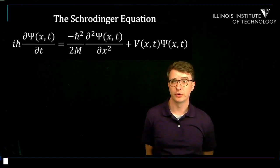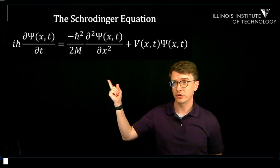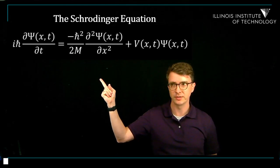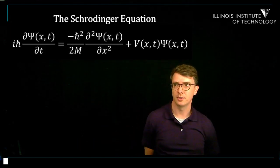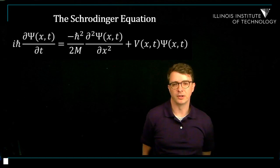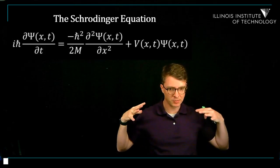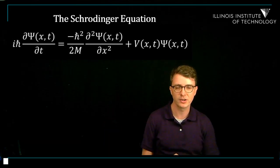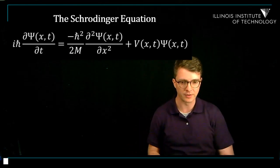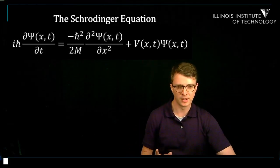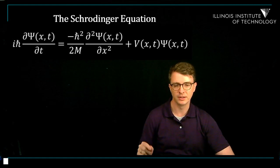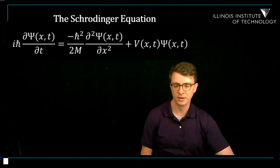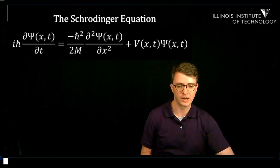Hi, everybody. It's time for us to start to talk about the most important equation in quantum mechanics, which is the Schrödinger equation. You can see it right there in all its glory. In textbooks, this will just come out on page one — people say, this is the Schrödinger equation, and then we start to work with it. But in this pre-lecture, I want to give a little bit of context and try to help see where this equation comes from.